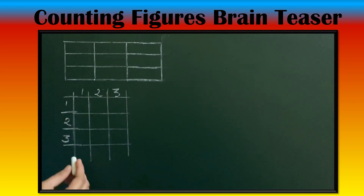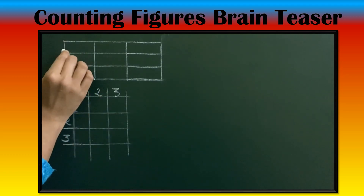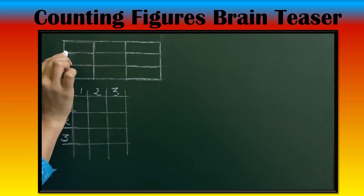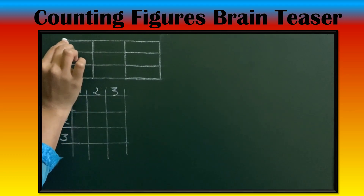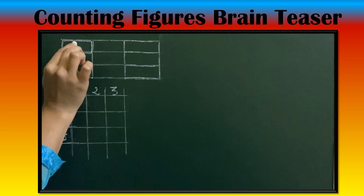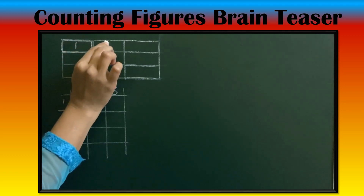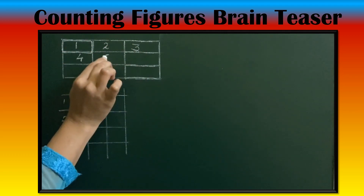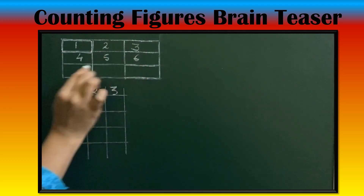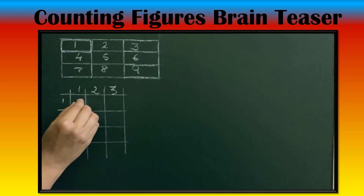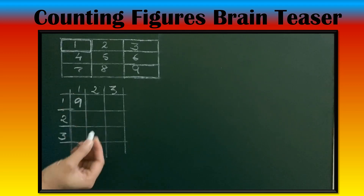In this 3 into 3 matrix, the small rectangle of size 1 into 1 — 1 row, 1 column — we count: 1, 2, 3, 4, 5, 6, 7, 8, 9. So there are 9 rectangles of size 1 row, 1 column.